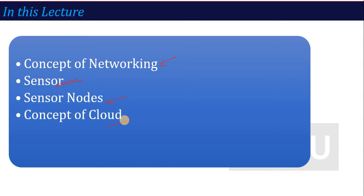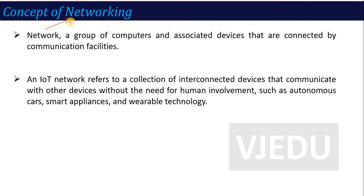In this lecture we have the concept of networking. What is a network? If I have connected with another system to communicate, then we connect two computers to the same platform — for example, a computer and a printer. When a printer is attached to a computer, these two devices are on the same platform so that both devices can communicate with each other. That is called a network: a group of computers and associated devices connected by communication facilities so that they can communicate with each other within the formed network.